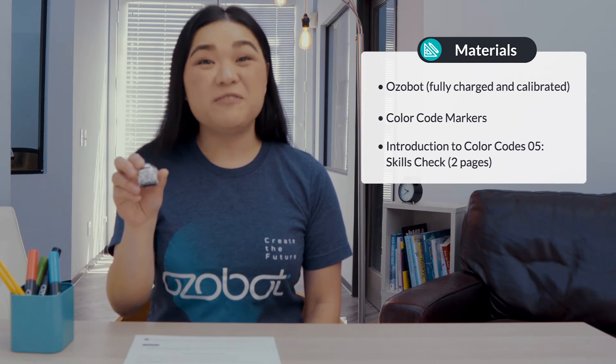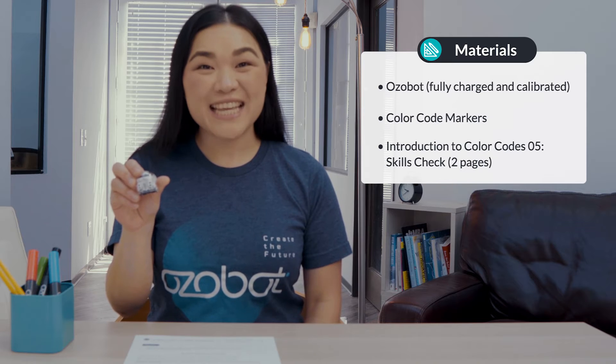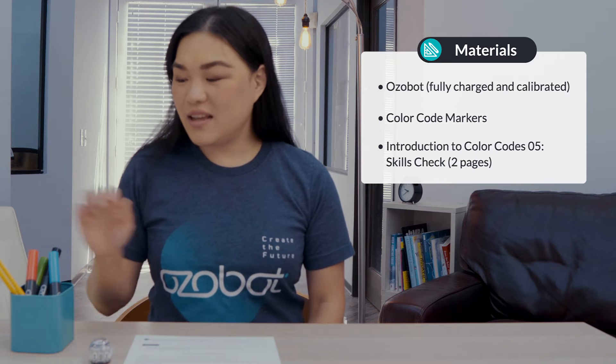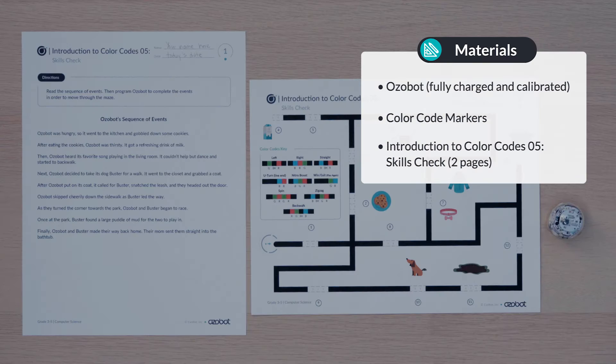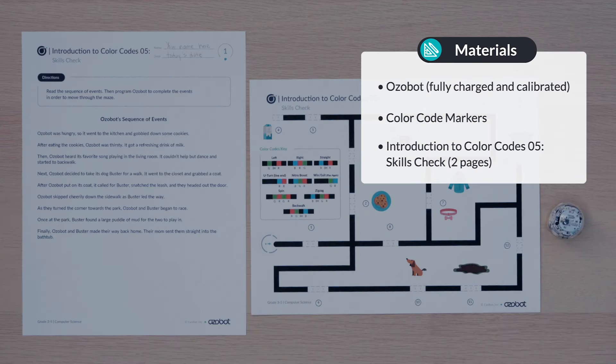For today's lesson, you'll need an Ozobot, fully charged and calibrated, color code markers, and your introduction to color codes lesson five skills check activity sheets.